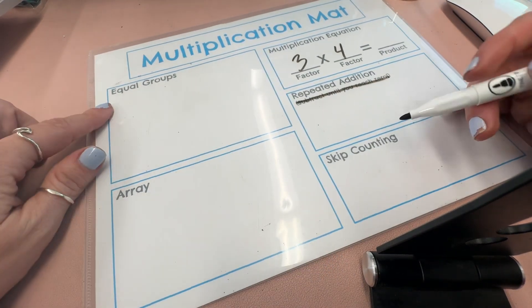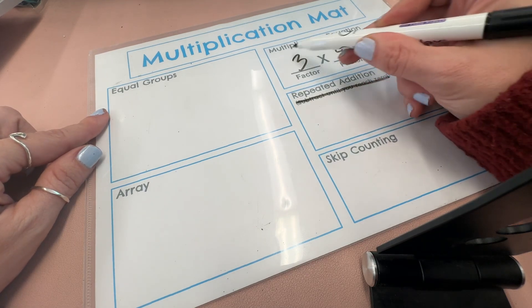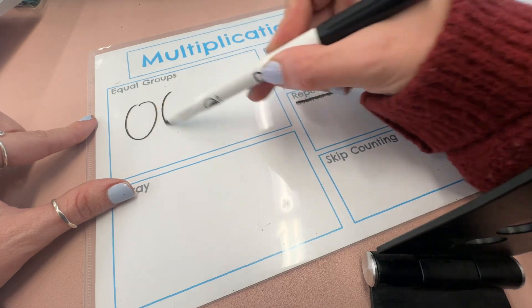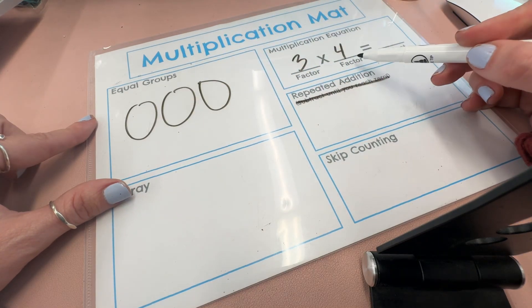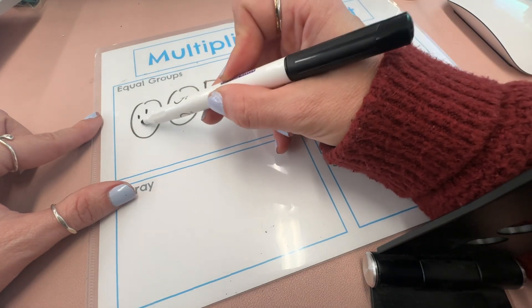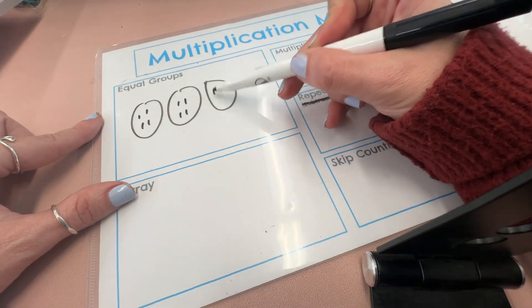So one way you could do it with equal groups is by drawing the groups. Our first factor tells us how many groups to draw. So there's three groups. Our second factor tells us what goes inside each group. So four - one, two, three, four in each of the three groups.